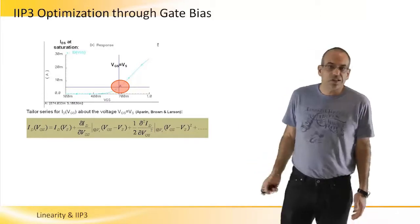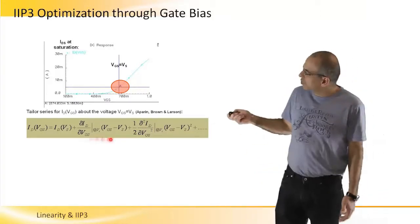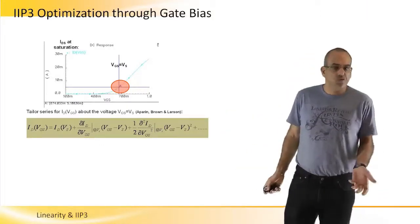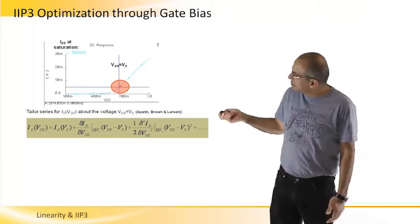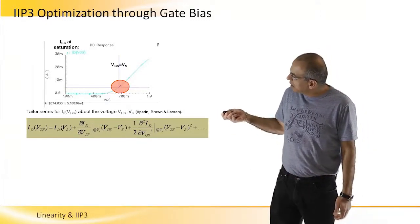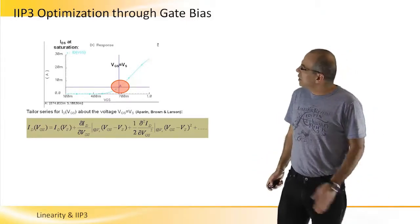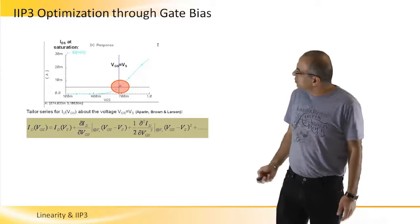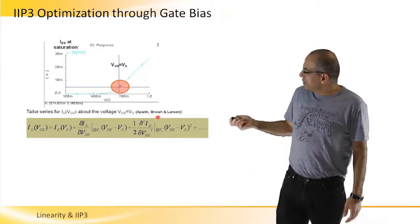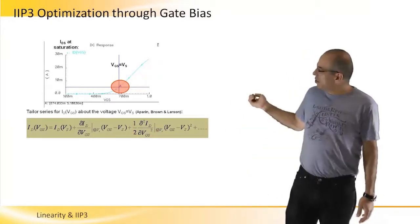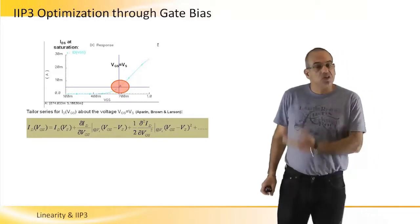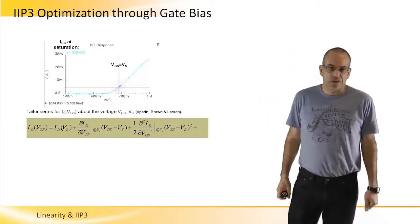The first one will be just a DC component. Then we have the first derivative multiplied by the difference between the actual voltage to the point voltage where the series was developed. And then we have the second derivative and so on. So this is the Taylor series around the point VGS equals VS.